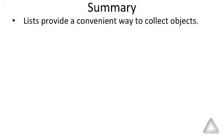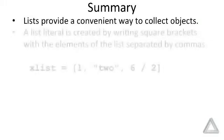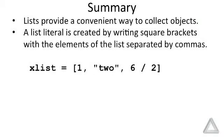Lists are themselves objects. They are a container in which we can put various elements or objects, and a list literal is created by writing square brackets with the elements of the list separated by commas.